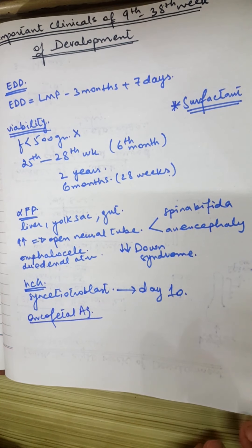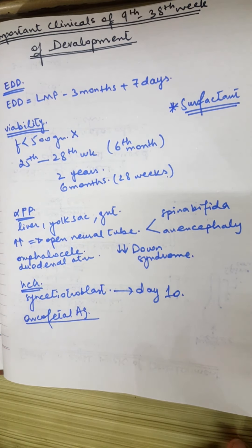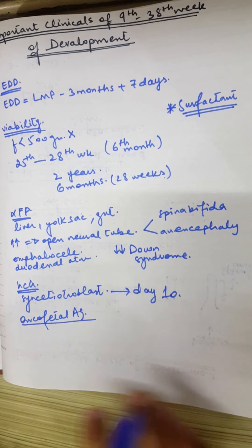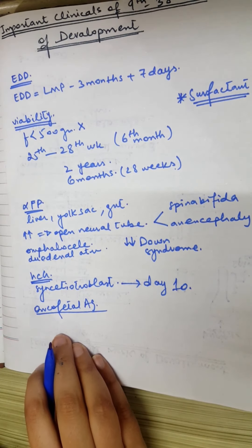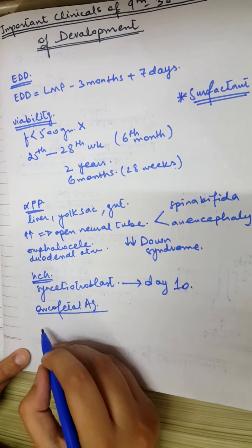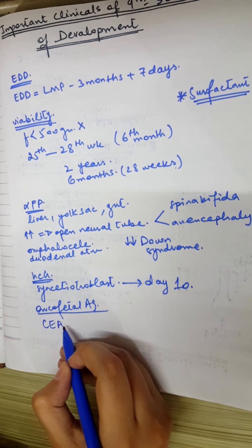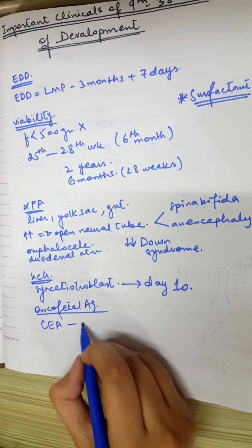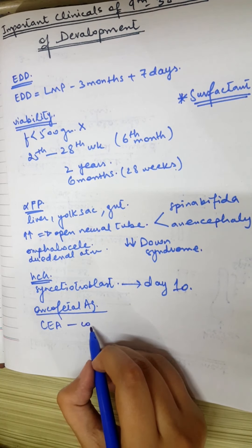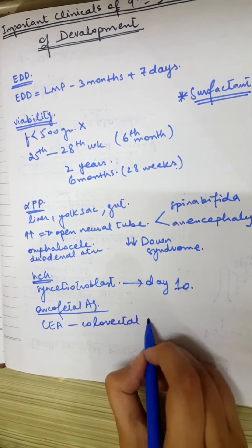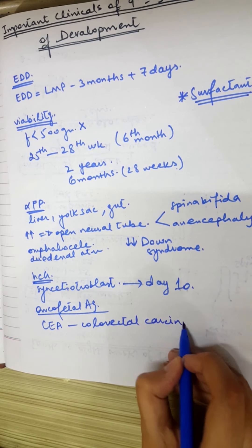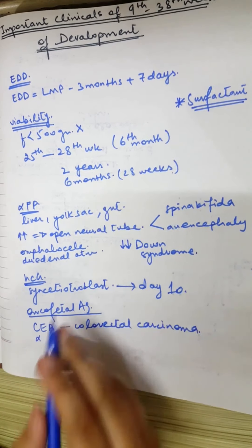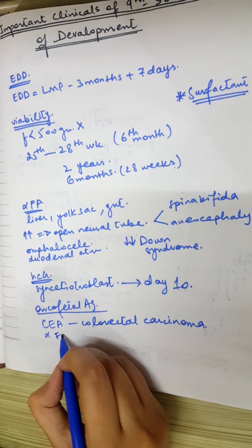Oncofetal antigens are cell surface antigens that appear in embryonic cells. For example, carcinoembryonic antigen, or CEA, is associated with colorectal carcinoma. Moreover, Alpha-Fetoprotein is also an oncofetal antigen, which we have already discussed.